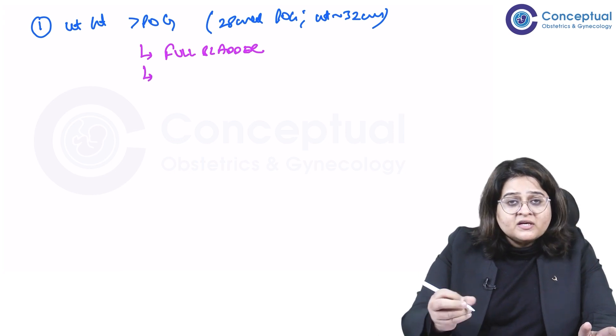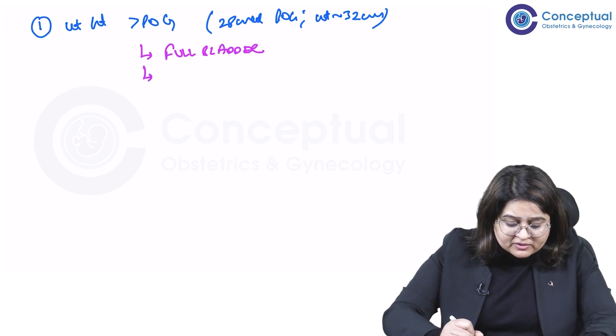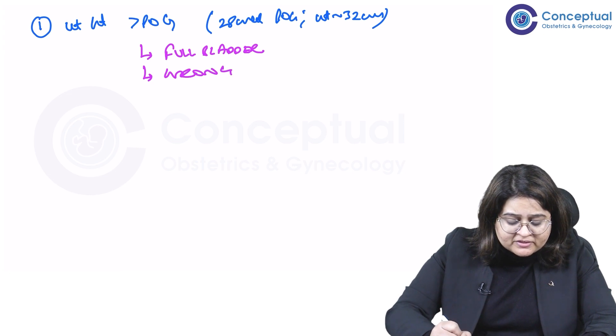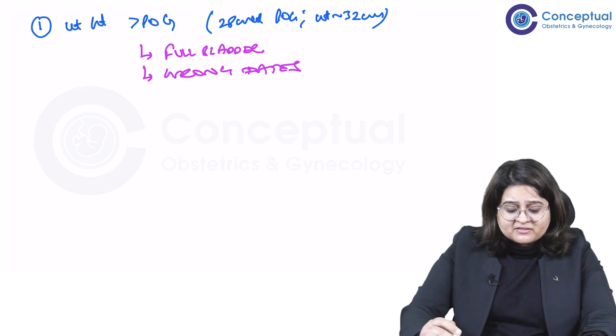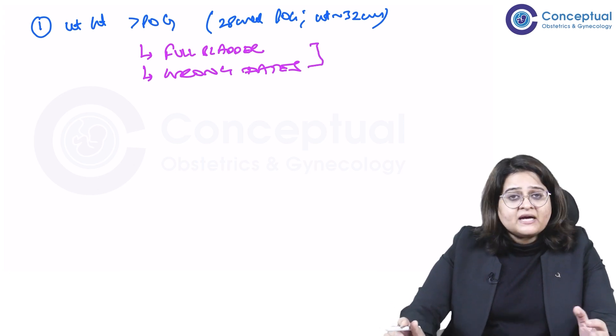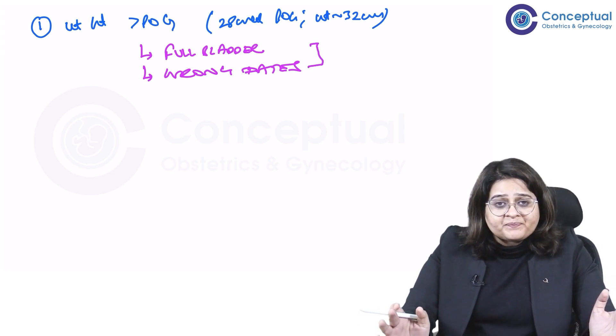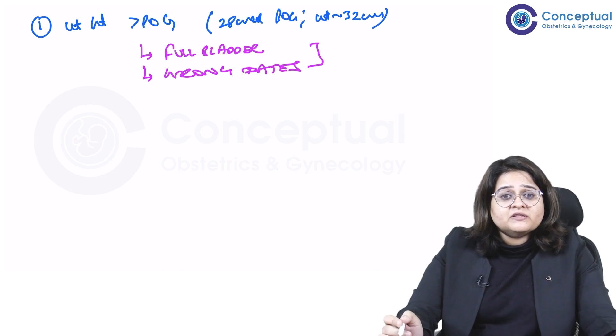What's the second thing that can cause a uterine height more than the POG? Maybe you've calculated her POG wrongly. So recalculate her dates.